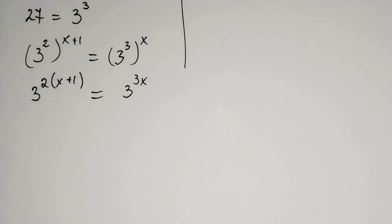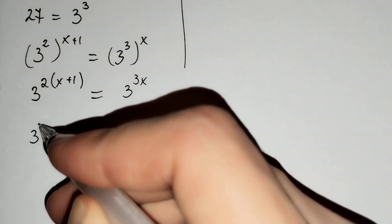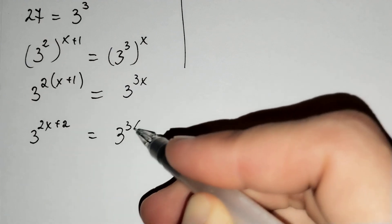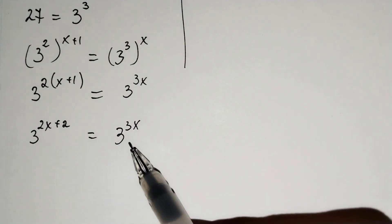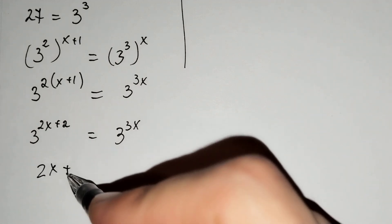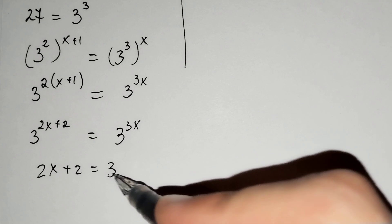And then this equals 3 to the power of 2x plus 2 equals 3 to the power of 3x. The bases are the same, so 2x plus 2 should equal 3x.